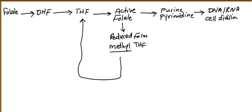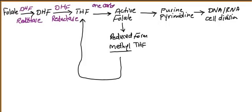Folate converts into dihydrofolate by the enzyme dihydrofolate reductase. Another dihydrofolate reductase is also responsible for converting dihydrofolate into tetrahydrofolate. Tetrahydrofolate then needs a one-carbon unit, which it takes from glycine or serine, to convert into active folate.